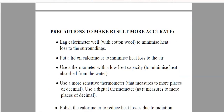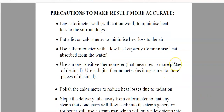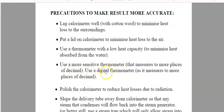These precautions are quite well known and can be used for a wide variety of experiments. We can lag the calorimeter with cotton wool or polystyrene foam to minimize heat loss to the surroundings. We can put a lid on the calorimeter to minimize heat loss to the air. We normally use a thermometer with low heat capacity, which minimizes heat absorbed from the water. We can also use a more sensitive thermometer — such as a digital thermometer measuring to one or two decimal places. We can polish the calorimeter to reduce energy losses due to radiation. I like giving the precaution and then the reason why in the one sentence.